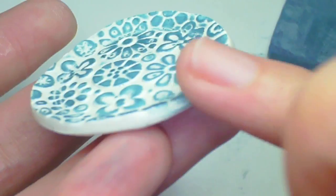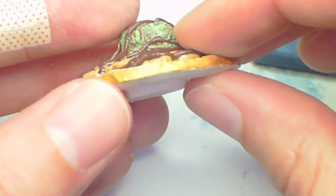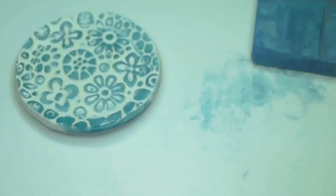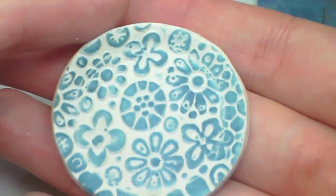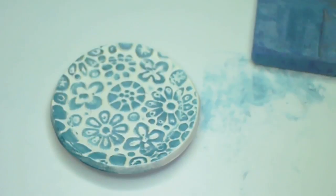You could do the edges in the same color or leave it plain of course, but I like to add some gold. So what I do is after it's baked, I paint it on with a paintbrush and that's about it. So thanks for watching, bye!